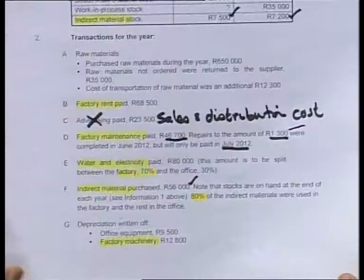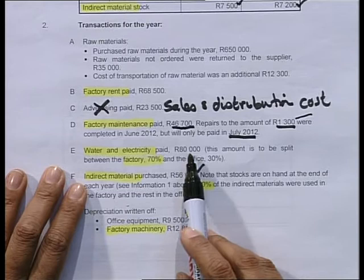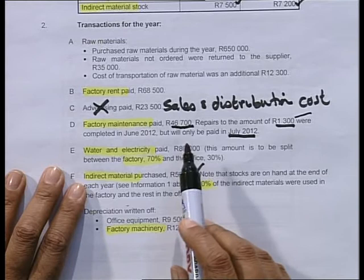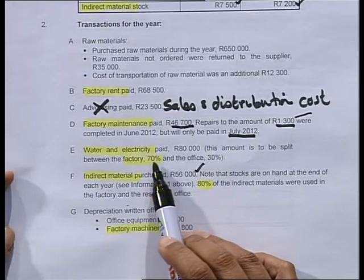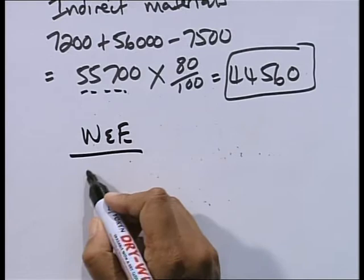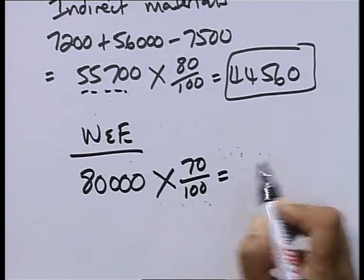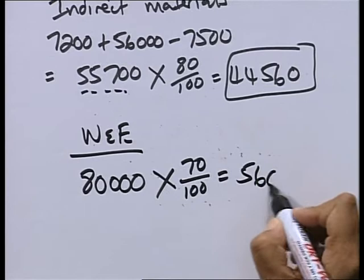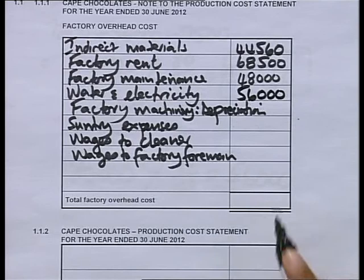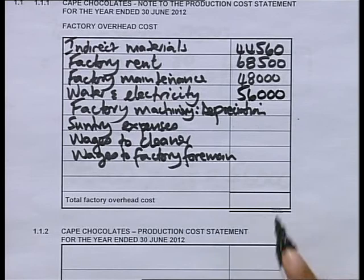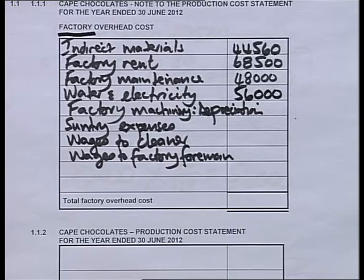Water and electricity paid for the year was 80,000. This amount is to be split between the factory at 70% and the office at 30%. So I take 80,000 times 70% and I get 56,000. My expense for water and electricity for the factory is 56,000 for the year. Although I paid 80,000, it's only the 56,000 that is involved with the factory.